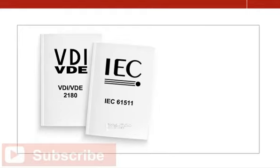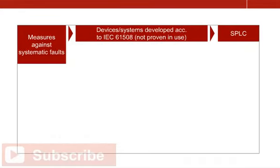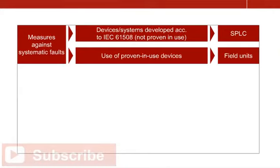According to VDI VDE 2180 and IEC 61511, measures against systematic and random faults, as well as measures related to fault tolerance, are required for devices used in safety instrumented functions. To exclude systematic faults with an adequately high degree of safety, it suffices to develop and manufacture electronic devices and systems not used in the field, such as programmable logic controllers, in accordance with IEC 61508. For field units, however, systematic faults can only be excluded by providing evidence of prior use.